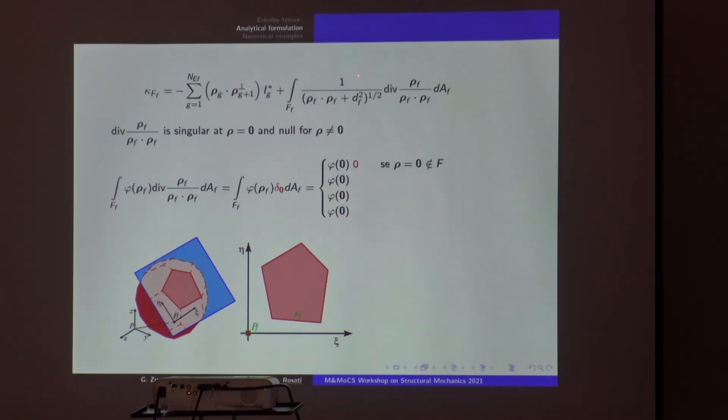As you see, this integral, for instance, if you have Df=0 and the rho vector—the origin of the reference frame you introduce on each face to make the integration in the 2D domain—if you have the origin of the 2D domain within your face and this is zero, you have a singularity. But luckily you have this sort of annihilation term that makes you establish that if rho=0 belongs to the face, basically this integral is zero.